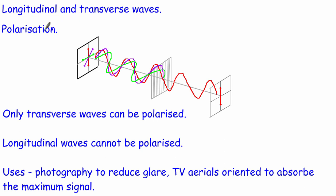There's one application that depends on whether waves are longitudinal or transverse: polarization. Normally when light is given out, it comes out in all sorts of different directions. Light, being part of the electromagnetic spectrum, is a transverse wave — so its oscillations are perpendicular to the direction of energy transfer — but those oscillations can be in many different planes: vertical, horizontal, at 45 degrees, and many more. Light from a light bulb is unpolarized.